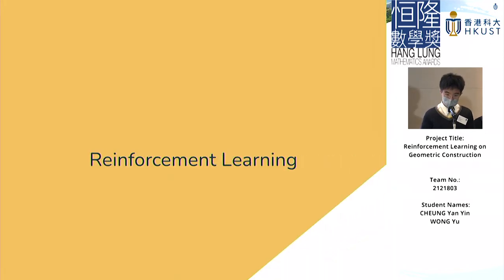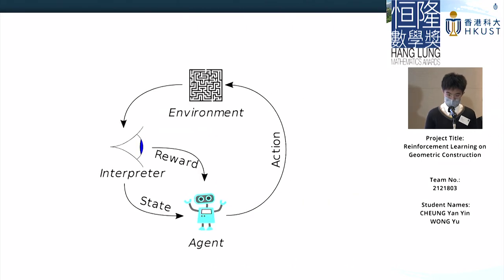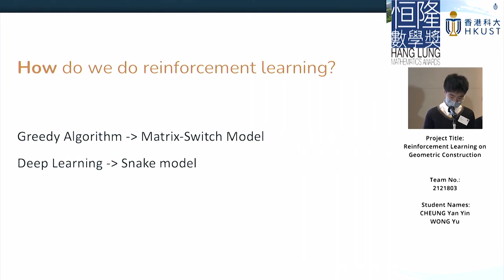Lastly, we apply reinforcement learning on these refined sets. Why do we still need reinforcement learning if we already have efficient sets? Because we only reduced irrelevant points and have not yet determined how to construct the points. Reinforcement learning has an agent act upon the environment, and through feedback with rewards, the agent is modified to better suit the environment. We apply this through two major methods: a greedy algorithm and deep learning.